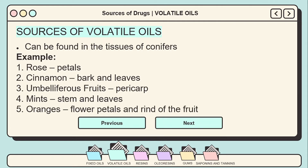Volatile oils can be found in the tissues of conifers, but only in significant quantities in the petals of roses, bark and leaves of cinnamon, only in the pericarp of umbelliferous fruits, only in the stems and leaves in mints, and in oranges, one kind of oil in the flower petals and another kind in the rind of the fruit.